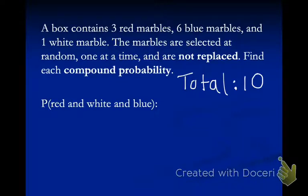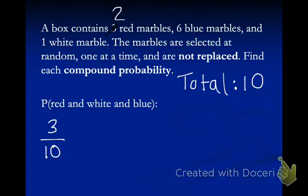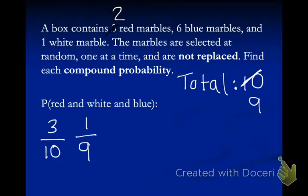What's the probability of getting a red and a white and a blue? My total is ten. The probability of getting a red is three out of ten. When I take one red out, I now have two red marbles, six blue marbles, and one white marble, so my total goes down to nine. My next probability is white: one out of nine. Then that one white becomes zero, and my total goes down to eight.